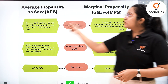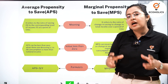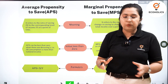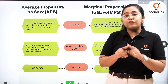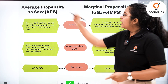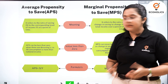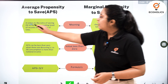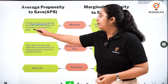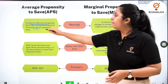The average propensity to save and the marginal propensity to save are both very crucial concepts in macroeconomics. Let's first understand the basic difference between them. Average propensity to save, also called APS, is the ratio of savings to the corresponding level of income at a certain point of time.